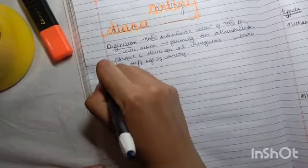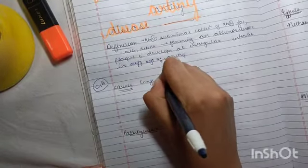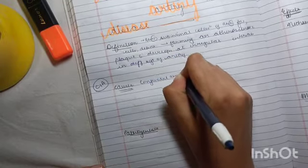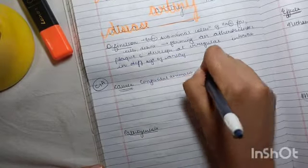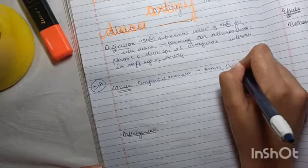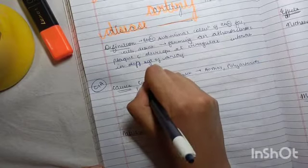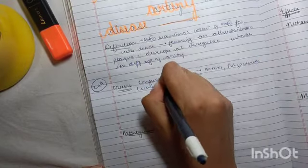To remember the causes, use the acronym CIA: congenital anomalies like aortitis and polyarteritis.